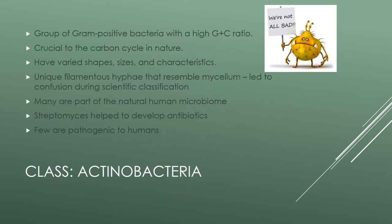Actinobacteria are a group of bacteria that are gram-positive and have a high G and C — guanine and cytosine — ratio. They are common in soil and are crucial to the carbon cycle in nature. These are some of our composters, and they play a significant role in decomposition of organic materials. They're also commensals in relation to humans and make up part of the microbiome. They also play a significant role in the development of antibiotics and antifungals. While most of them don't impact humans at all, there are a handful that are significantly pathogenic.